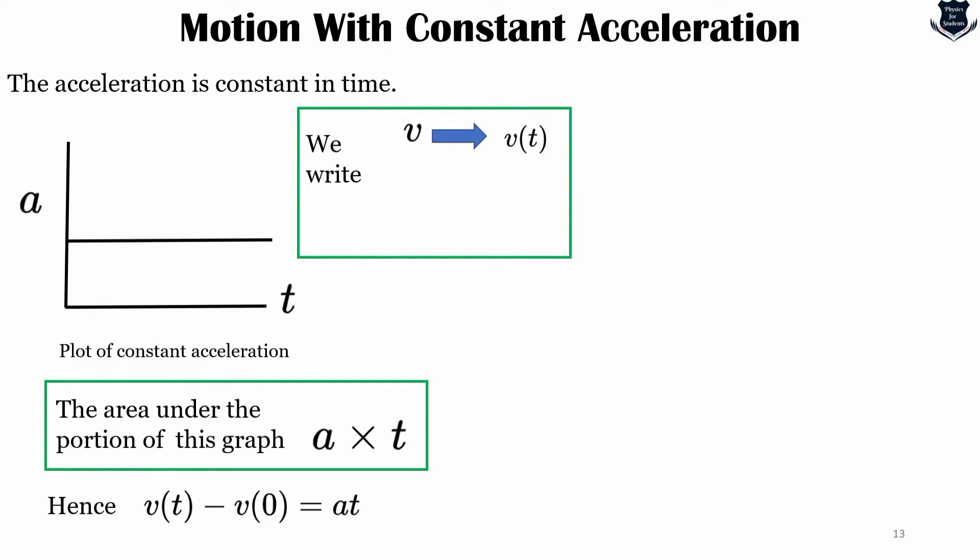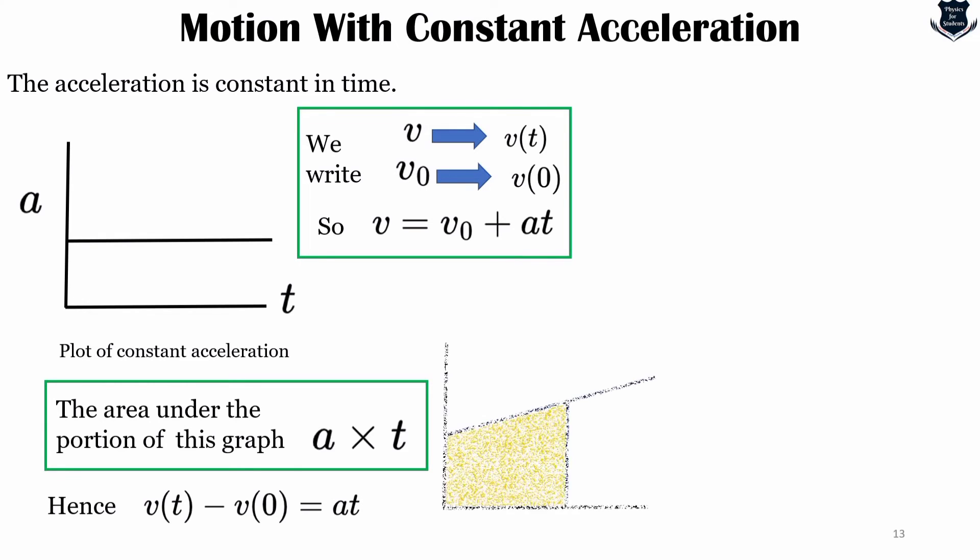From this we can deduce that v(t) minus v(0) will be at. To make our notation simpler, we can make contact with the notation and we write v instead of v(t) and v₀ instead of v(0). From here it follows that v equals v₀ plus at. The graph of v versus t is a straight line with slope a.